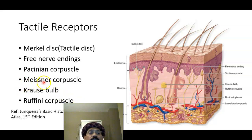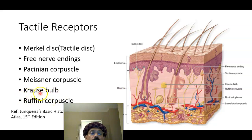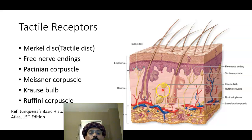We have Meissner's corpuscle, which is a tactile receptor present in the dermal papilla. We also have the Krause bulb (end bulb), which senses light vibration, and the Ruffini corpuscle, which senses cellular shearing and cellular damage. So a lot of tactile receptors are associated with the skin.